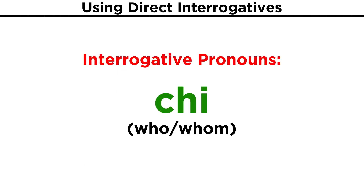Let's move on to more complex situations. The majority of interrogative clauses are introduced by special words called interrogative pronouns, adjectives, or adverbs. One important word to know will be chi, the personal pronoun that means who or whom. Unlike English, where who is used as a subject and whom is used as an object, in Italian there is no difference — it will always be chi.